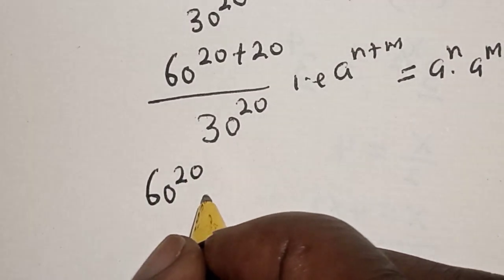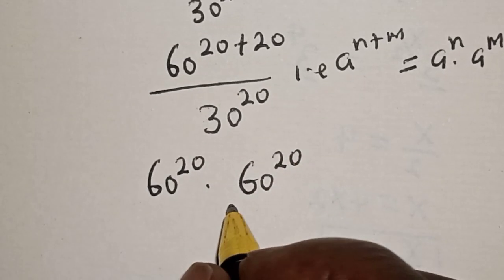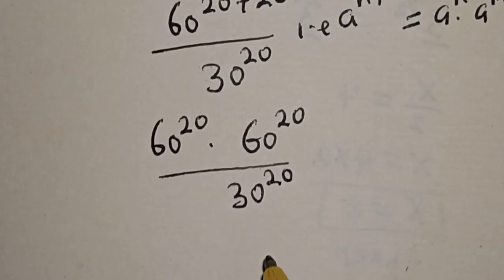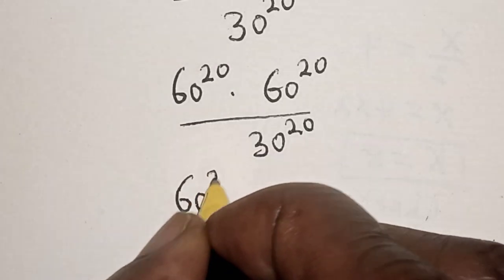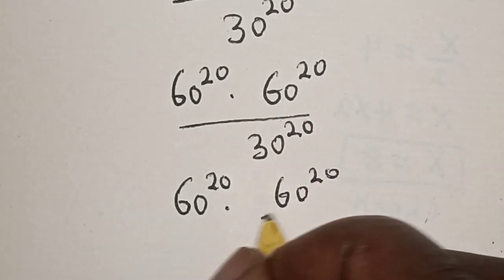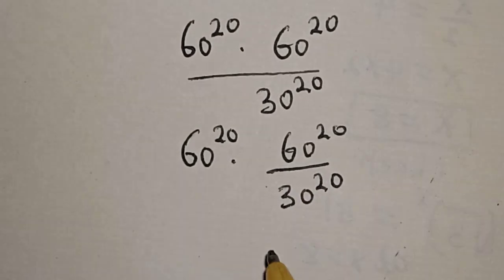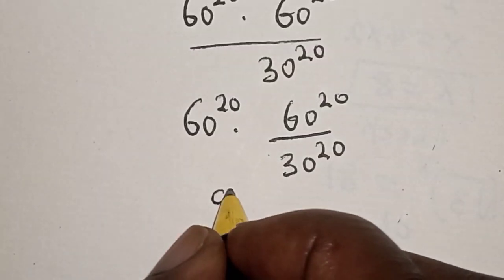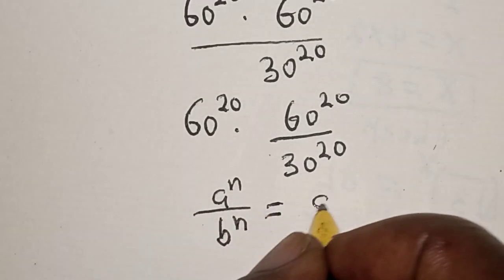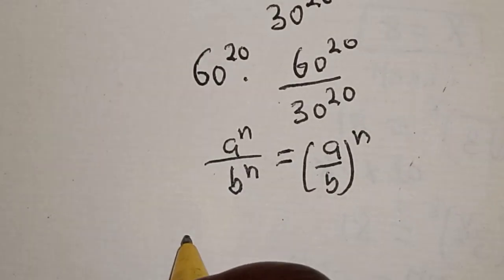So we have 60 raised to power 20 multiplied by 60 raised to power 20, divided by 30 raised to power 20. By splitting, we apply the rule that a raised to power n divided by b raised to power n is equal to a over b raised to power n.